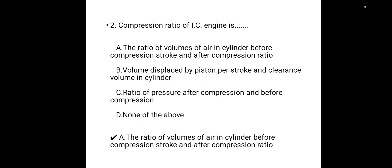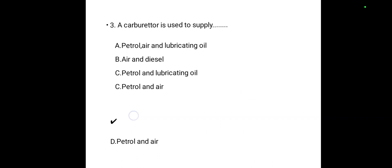Compression ratio of an IC engine is defined as: Option A — the ratio of volume of air in the cylinder before the compression stroke to after the compression stroke. That is the correct answer.